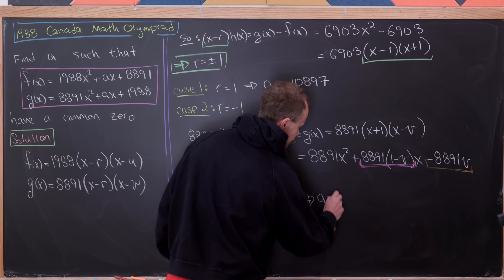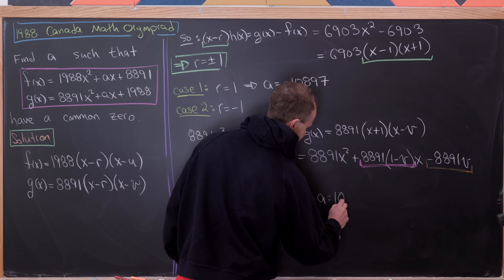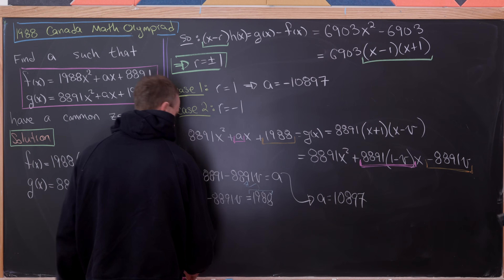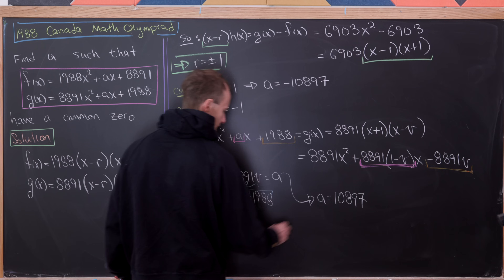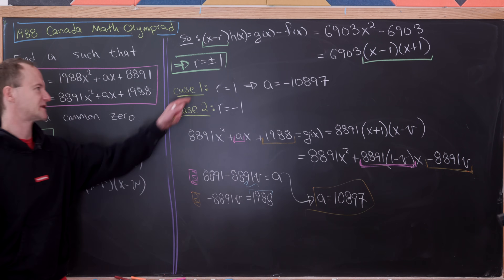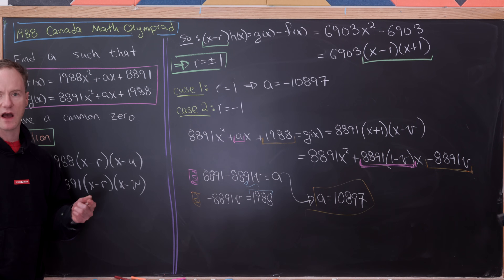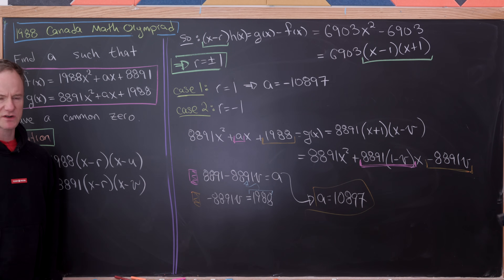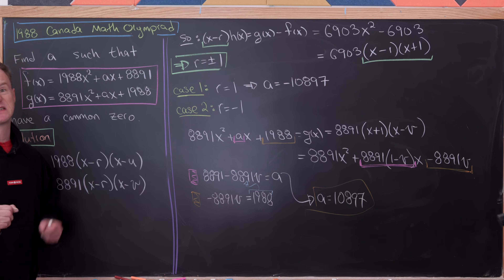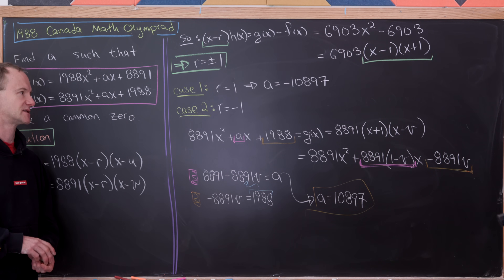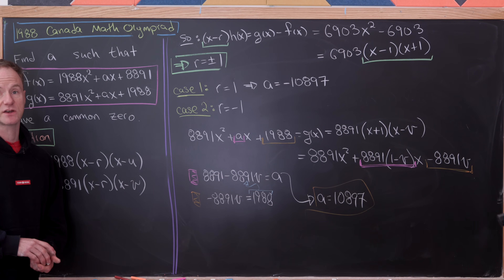Doing that calculation, we get a = 10,897, which is exactly the same magnitude but with the opposite sign compared to the first case. So there's a nice symmetry between the two cases. And that's a good place to stop.